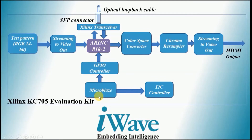MicroBlaze soft processor is used to control the ARINC 818 IP transmitter and receiver through GPIO. HDMI transmitter configuration is also done using this soft processor through the I2C controller.